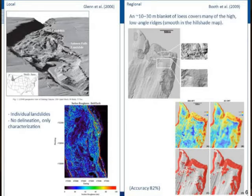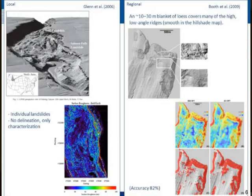There have been studies that have been quite influential for us, both at a local and regional scale, using LiDAR data. Here in the US you see studies from Glenn and also from Booth et al. They're quite nice and they identify regions where failure does occur or can occur, but it's not so much a characterization or delineation of individual landslides. The study on the right by Booth has always given me some doubts because ultimately the entire coastline is mapped as susceptible — which is true, but the entire area is essentially susceptible to failure there.